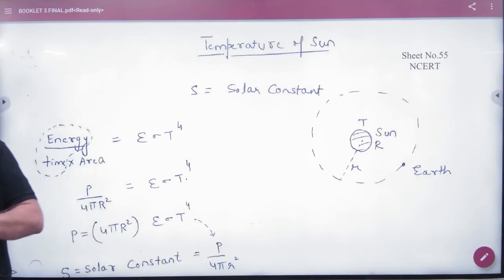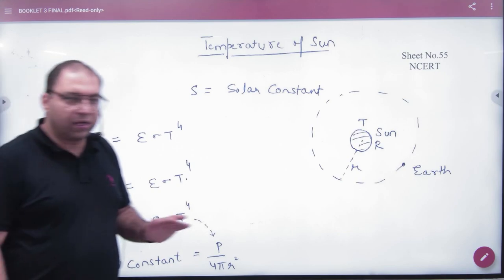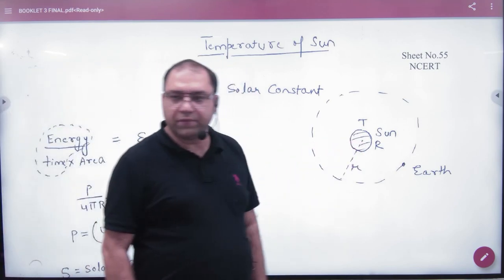Temperature of the sun. How can the temperature of the sun come out? The radius of the sun is capital R and the temperature of the sun is T.